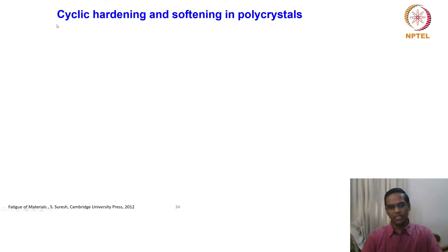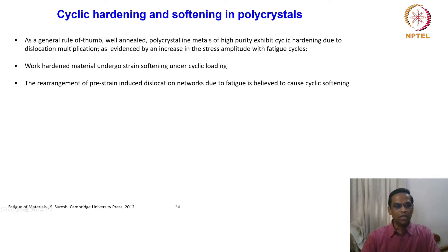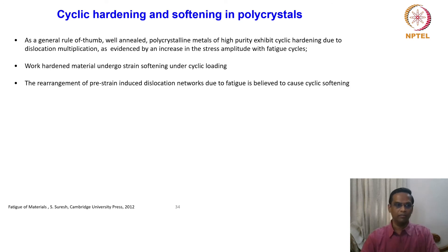Now we extend these ideas from single crystals and relate them to polycrystals. As a general rule of thumb, well-annealed polycrystalline metals of high purity exhibit cyclic hardening due to dislocation multiplication, as evidenced by an increase in stress amplitude with fatigue cycles. In a pure polycrystalline copper-type material in the annealed state, it exhibits cyclic hardening — analogous to work hardening in monotonic deformation. Work-hardened material then undergoes strain softening under cyclic loading, as is also true in monotonic loading.